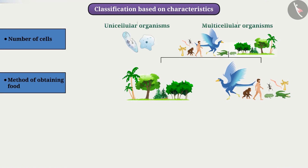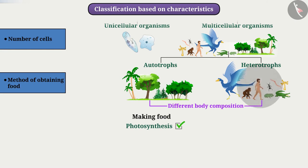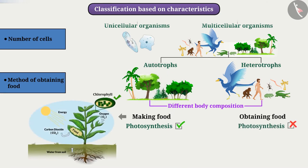Method of obtaining food: different organisms have different methods of obtaining food. The body composition of organisms that make food themselves and those that obtain food from others are different. The body of plants develops in terms of making food, while the body of animals develops in terms of obtaining food from outside. Green plants have chlorophyll, by which they absorb sunlight and, with the help of photosynthesis, make their own food. Animals do not have chlorophyll, so they are unable to perform photosynthesis. In this way, green plants come in one group, and different animals including humans and parasites come in another group.